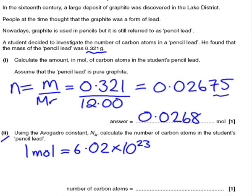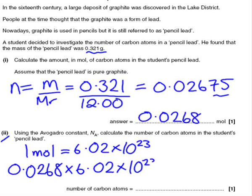And so, if you have 0.0268 moles instead of 1 mole, you need to multiply that by 6.02 times 10 to the 23, to give you your value of 1.61 times 10 to the 22 atoms.